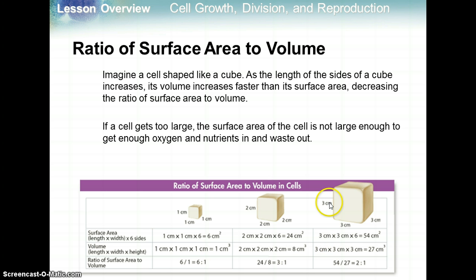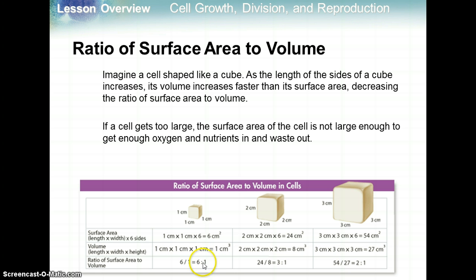For the large cube with 3 centimeter sides: surface area is 3 times 3 times 6 sides equals 54 centimeters squared; volume is 3 cubed equals 27 centimeters cubed. Dividing surface area by volume gives a 2 to 1 ratio. So when you have a smaller surface area to volume ratio, your cell is less efficient. You want a bigger surface area to volume ratio — that's a more efficient cell, with more surface area to exchange nutrients in and out relative to the volume.